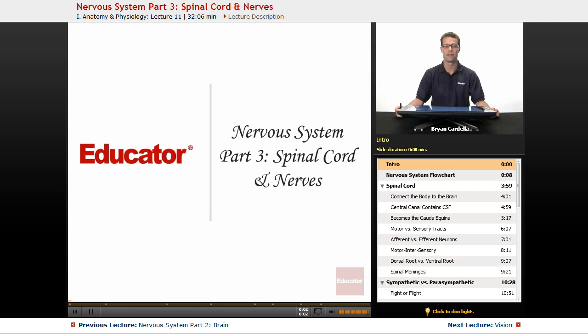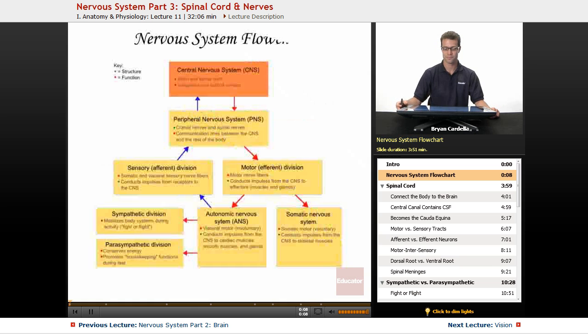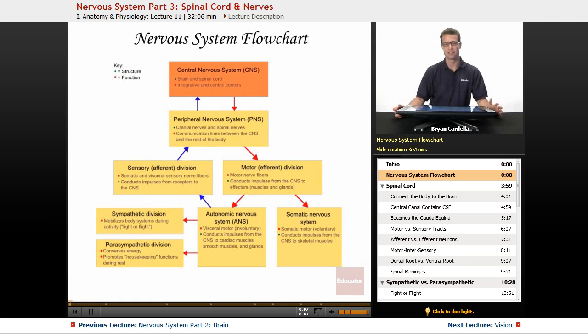Hi, welcome back to Educator.com. This is the next nervous system lesson, specifically on the spinal cord and nerves. If we were to look at the nervous system as a giant flowchart that had to do with the brain, the spinal cord, and all the nerves, this is a very good representation.